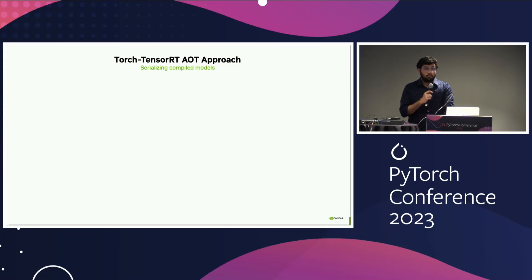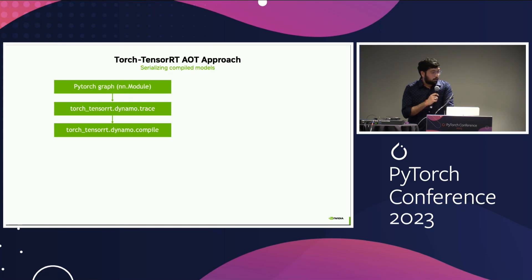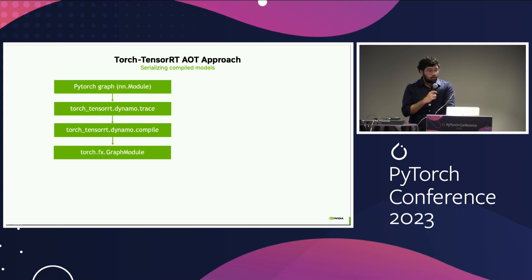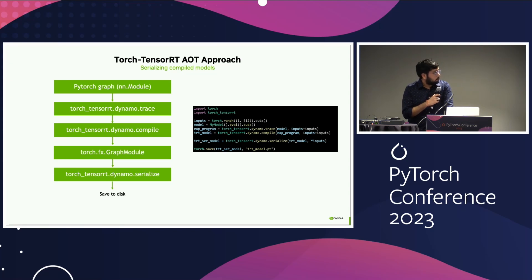One of the main benefits of the ahead-of-time approach is serialization. Given your PyTorch graph, you use the trace API to generate exported programs, which are compiled using dynamo.compile. You get a Torch FX graph module with TensorRT optimized engines within it. You can then use the dynamo.serialize API, which converts these graph module objects into either TorchScript or exported programs representation, and save them to disk. The code snippet shows it's easy: once you have your TensorRT model from dynamo.compile, just call the serialize API with the model and its inputs.